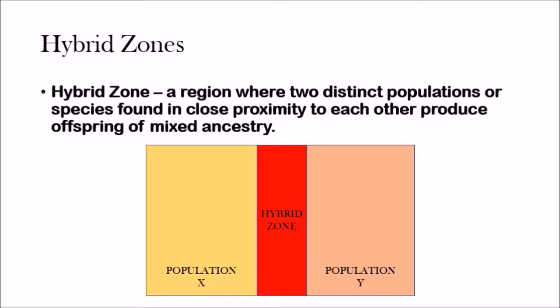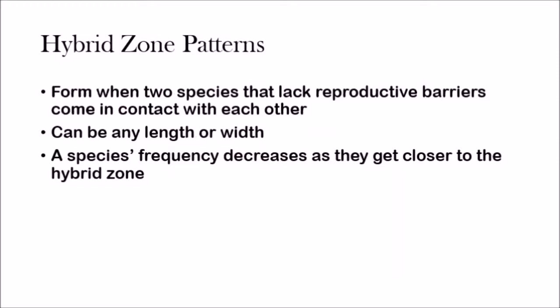So we have a diagram here — there's population X and population Y, and they're very close to each other and they start reproducing and they create this interesting zone called a hybrid zone. They tend to form when two species lack reproductive barriers and they come in contact with each other.